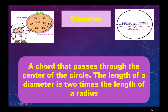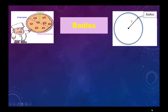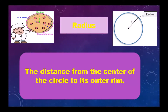Radius: the distance from the center of the circle to its outer rim. Here, from this center to the outer rim anywhere in the circle is known as radius.